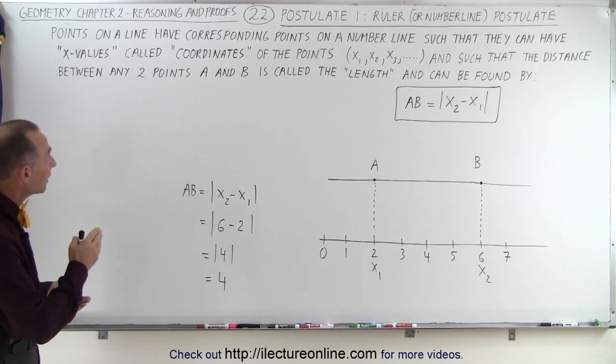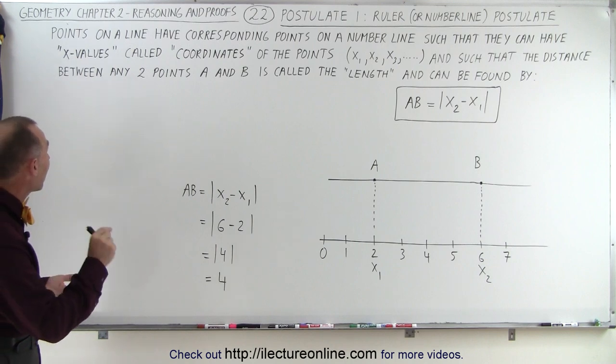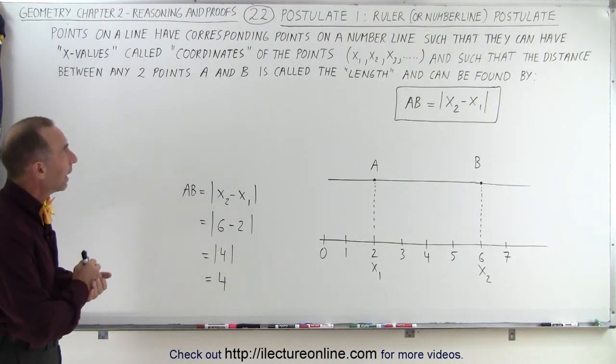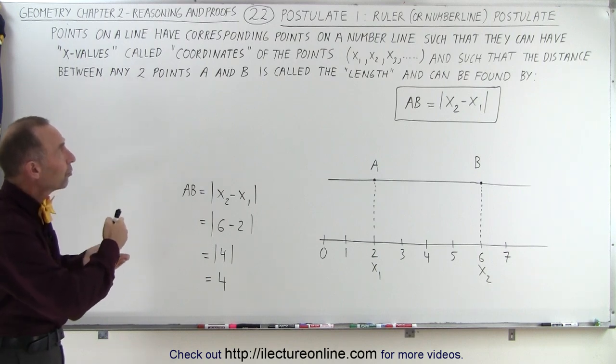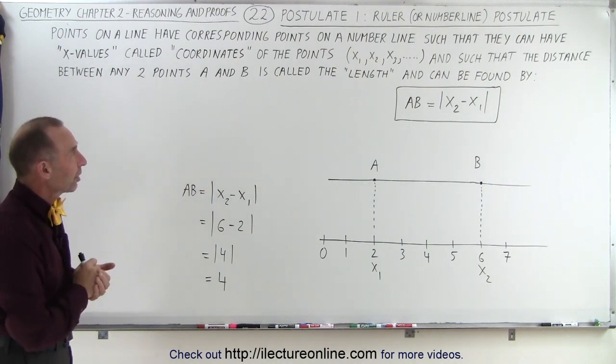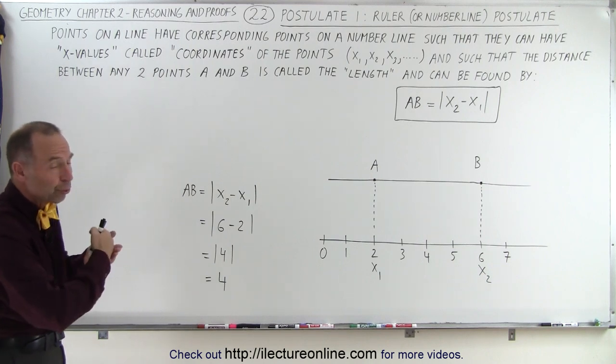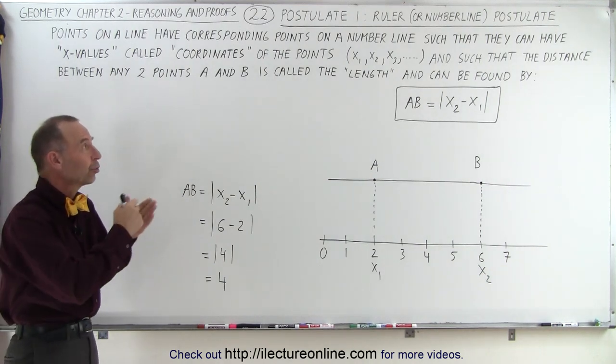Points on a line have corresponding points on the number line such that they have x values or coordinates. These are the coordinates of the points associated with the points on the line. We can call them x1, x2, x3, which are the coordinates associated with those points.